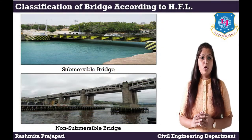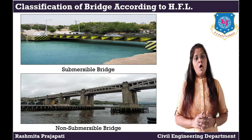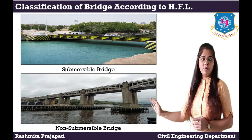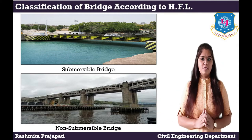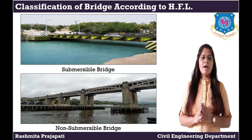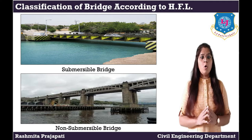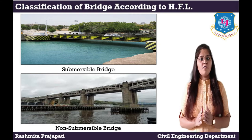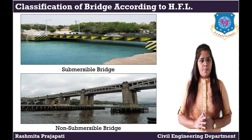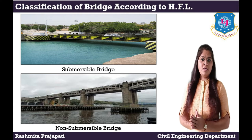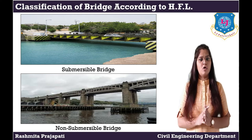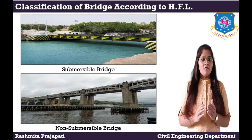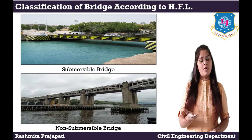Classification of bridge according to high flood level. Bridges are classified as submersible bridge and non-submersible bridge. Submersible bridge: a road causeway is a structure which allows flood to pass over it; it may or may not have openings for low water flow. Non-submersible bridge: in this type of bridge, the formation level of the road is kept above the high flood level so that maximum flood does not affect the traffic on the bridge.